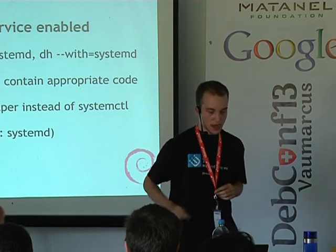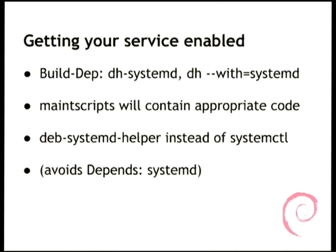Getting your service enabled: just as with update-rc.d, you need to enable services. The easiest way — if you already have a service file shipped by upstream or put your own into debian/package.service — is to add a build dependency on dh-systemd, use the dh command which you hopefully already use, and add the --with=systemd flag. Then everything happens automatically. The maintainer scripts generated as part of the package build will contain the appropriate code, calling a binary called deb-systemd-helper instead of systemctl.